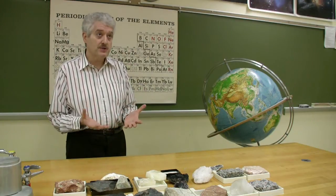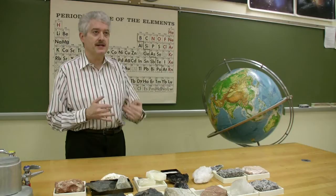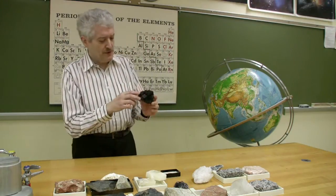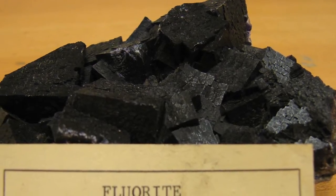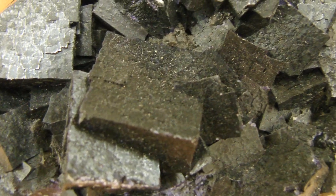It's a solid object with flat surfaces that meet at regular angles. Here's an example. The mineral fluorite, in this case, has cubic crystals. They're sort of interpenetrated, and so you can't see them too well.